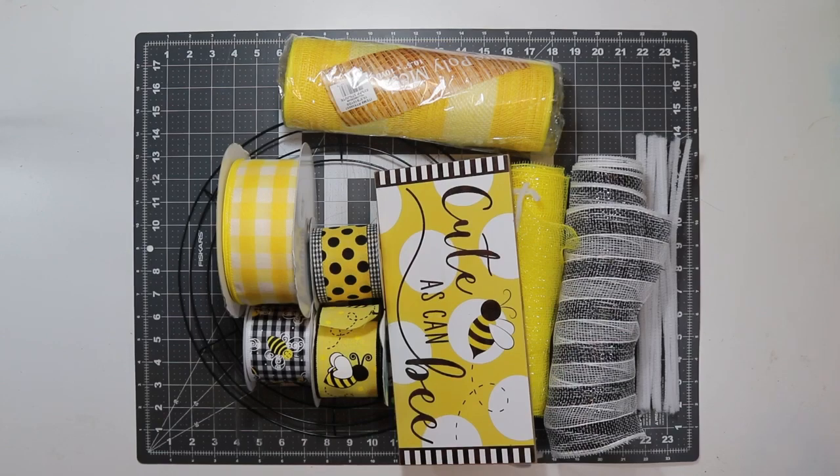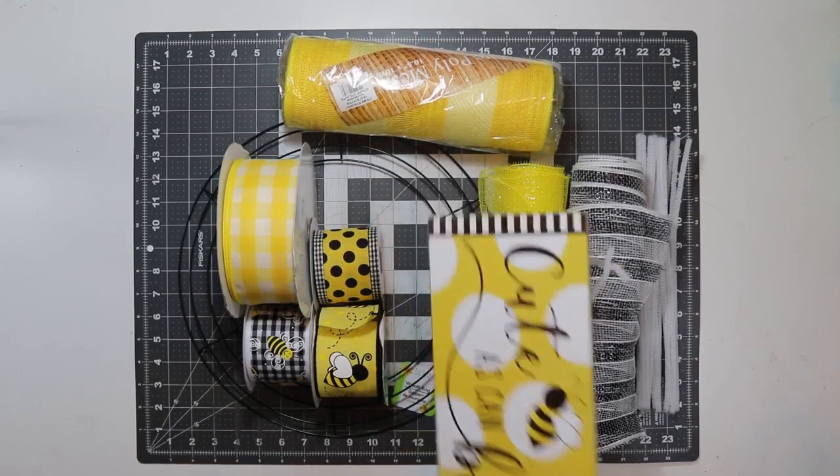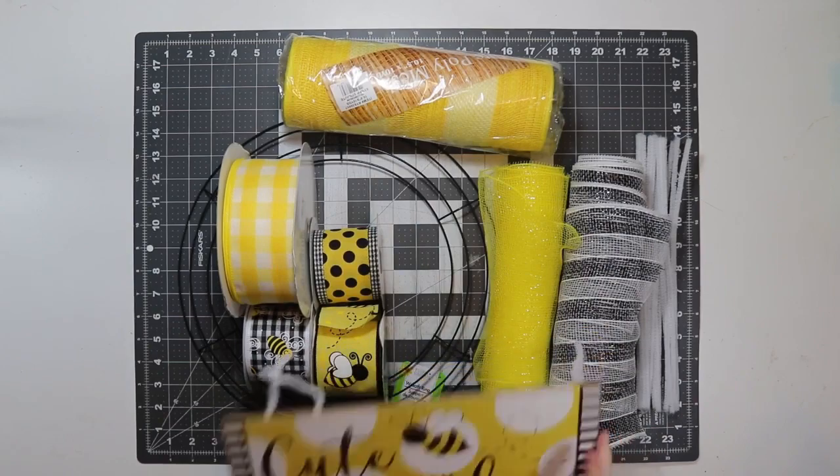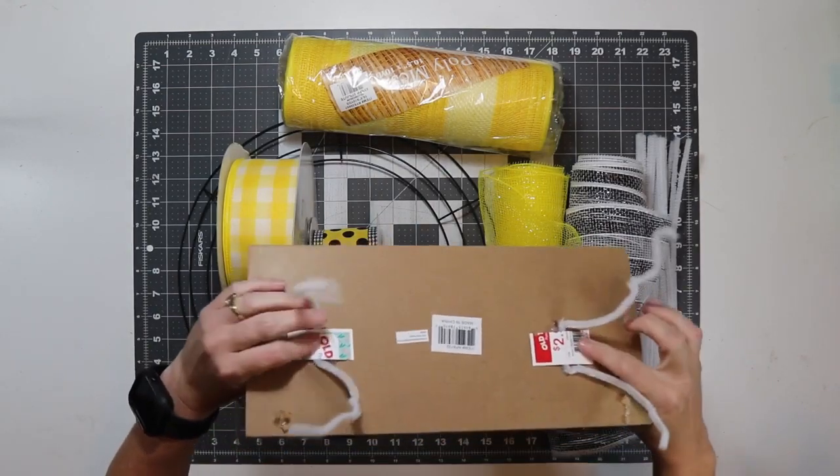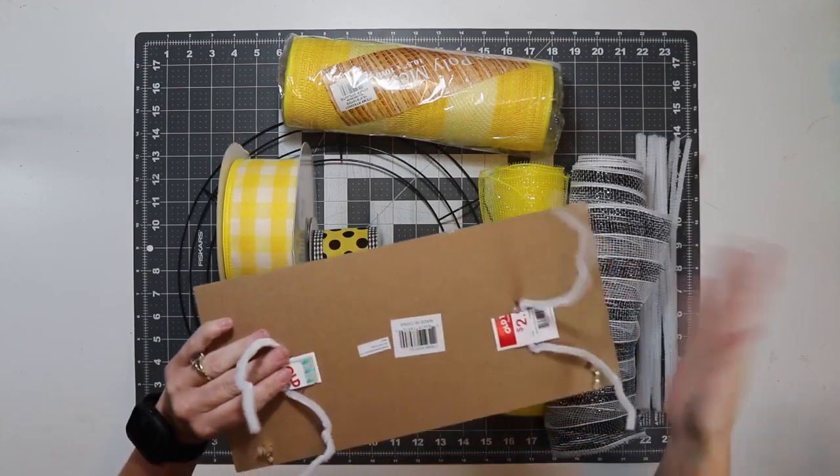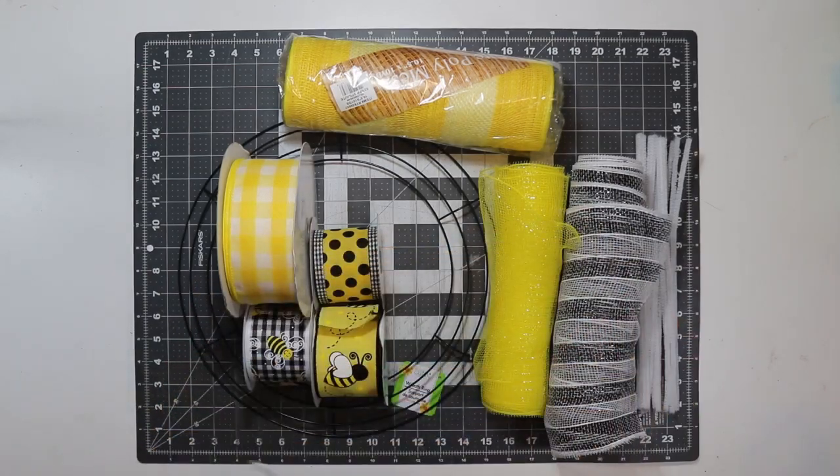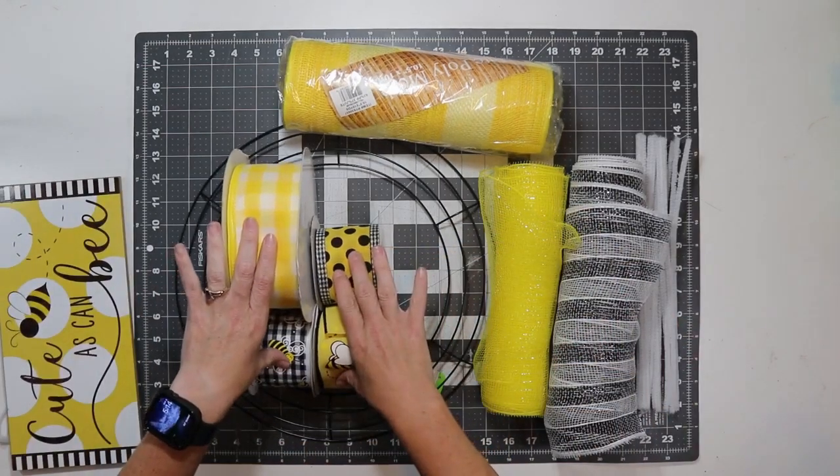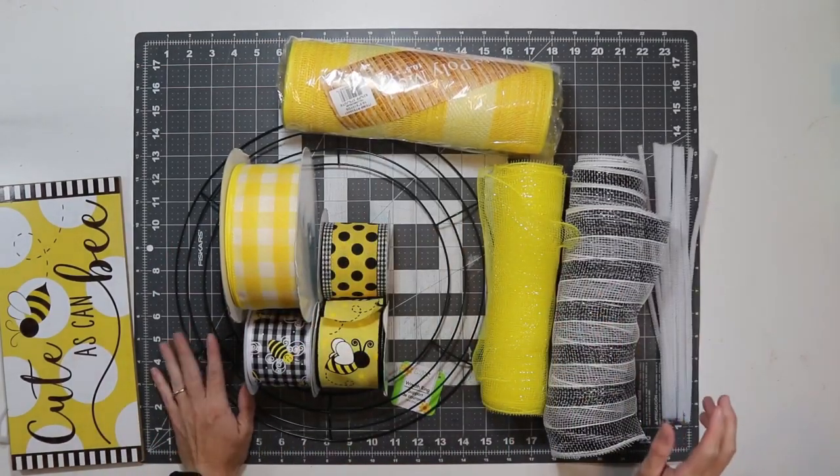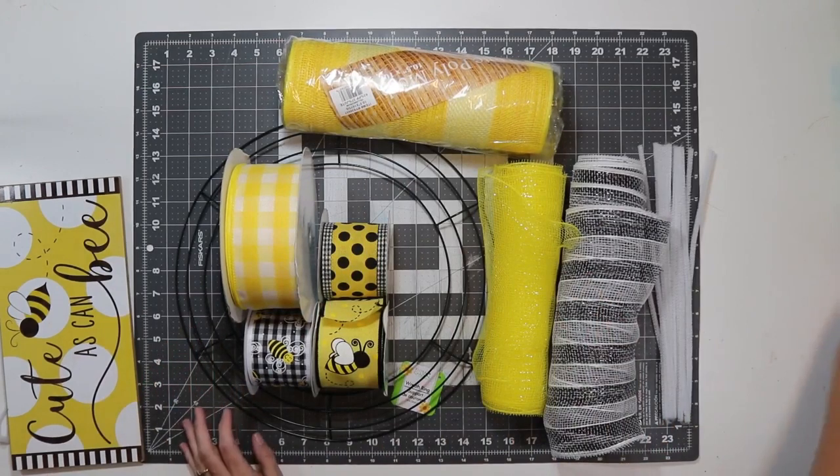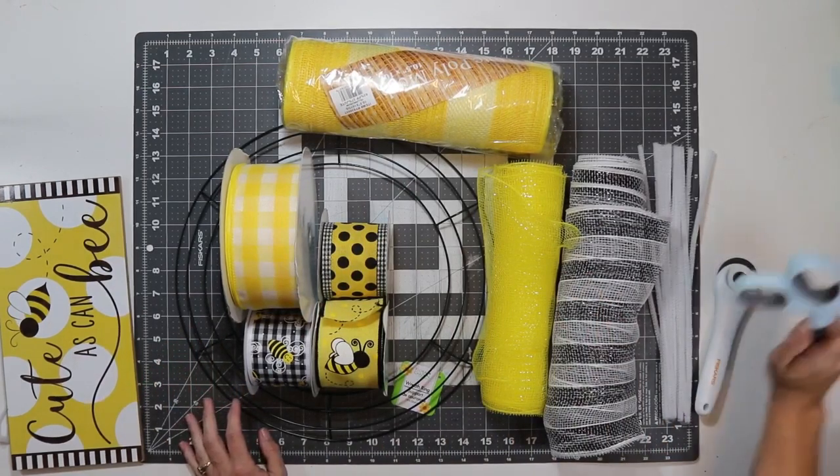These are the supplies I'm going to use to make this wreath. I'm not 100% sure if I'm going to use the sign yet, but I have already glued pipe cleaners to this. I got all this ribbon from Craft Outlet, and I believe I got all the mesh from Craft Outlet as well. I have my pipe cleaners, my wire frame, my rotary cutter, and some scissors.